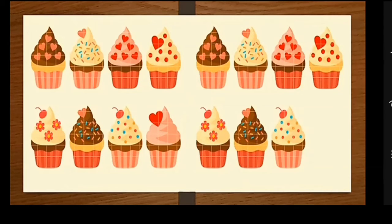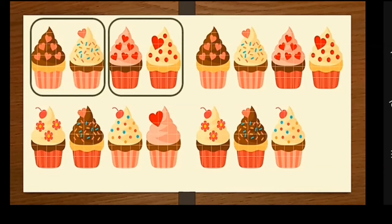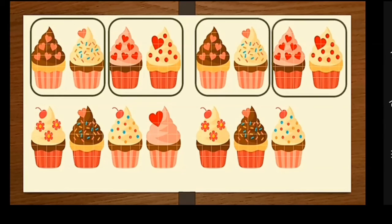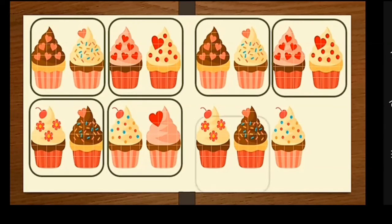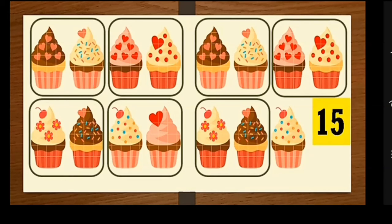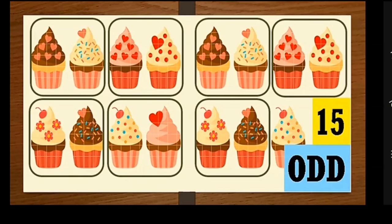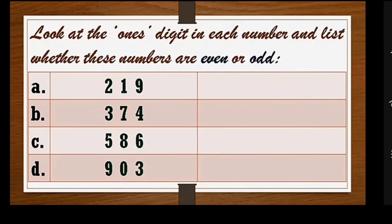Yummy, yummy ice creams! Let's pair them to find out whether the number of ice creams are even or odd. Let's pair them: one, two, three, four, five, six, seven pairs. As the last ice cream couldn't be paired, 15 is an odd number.